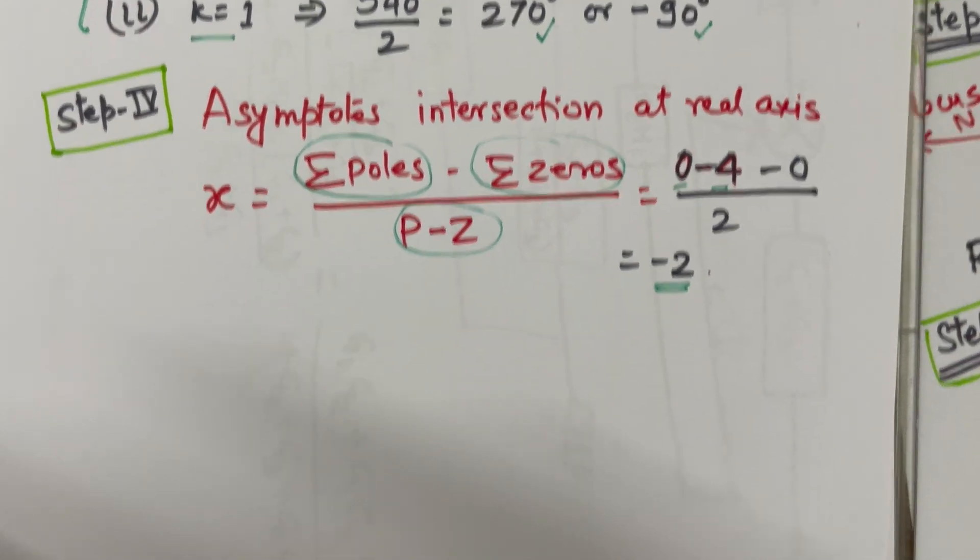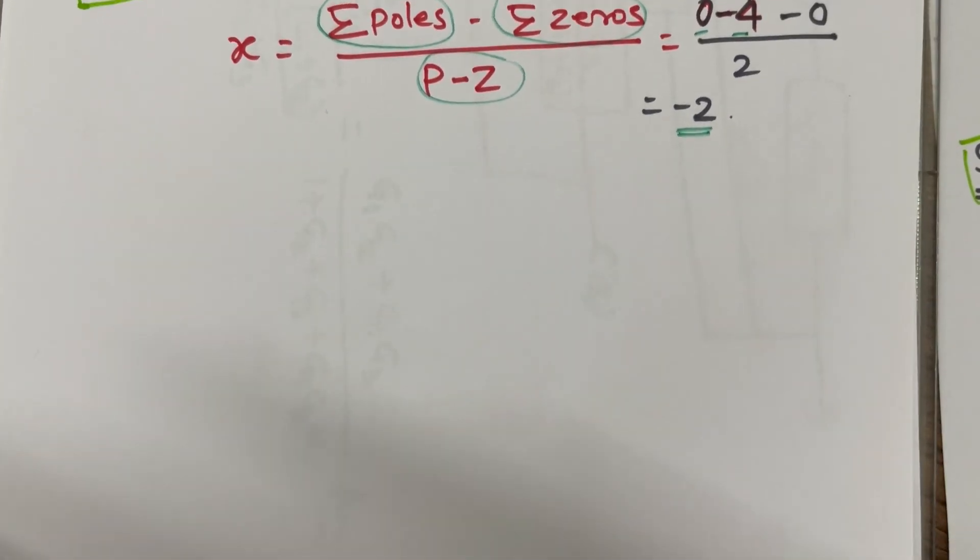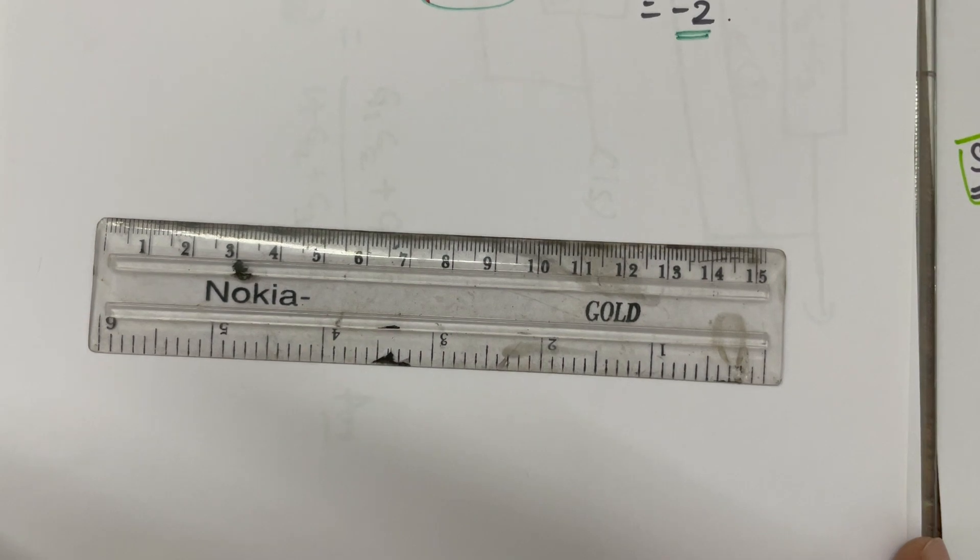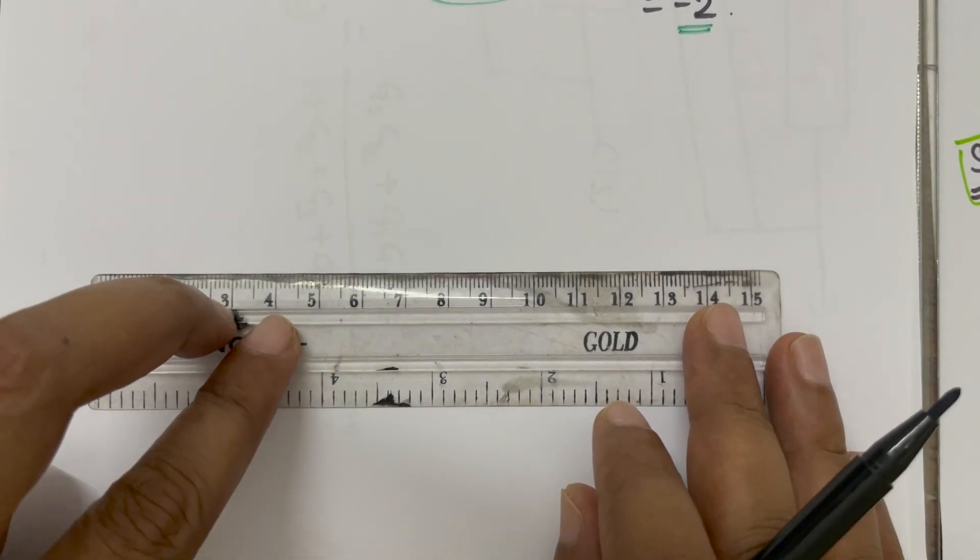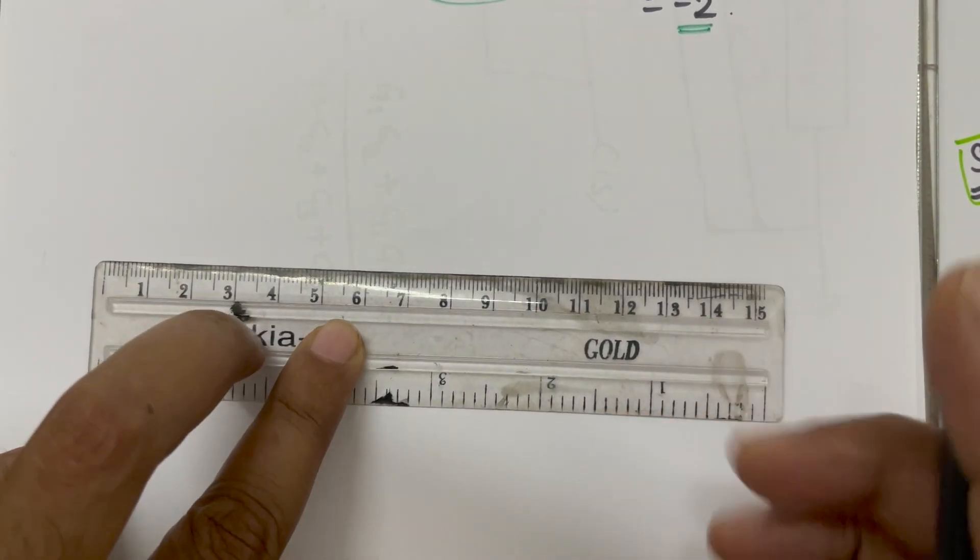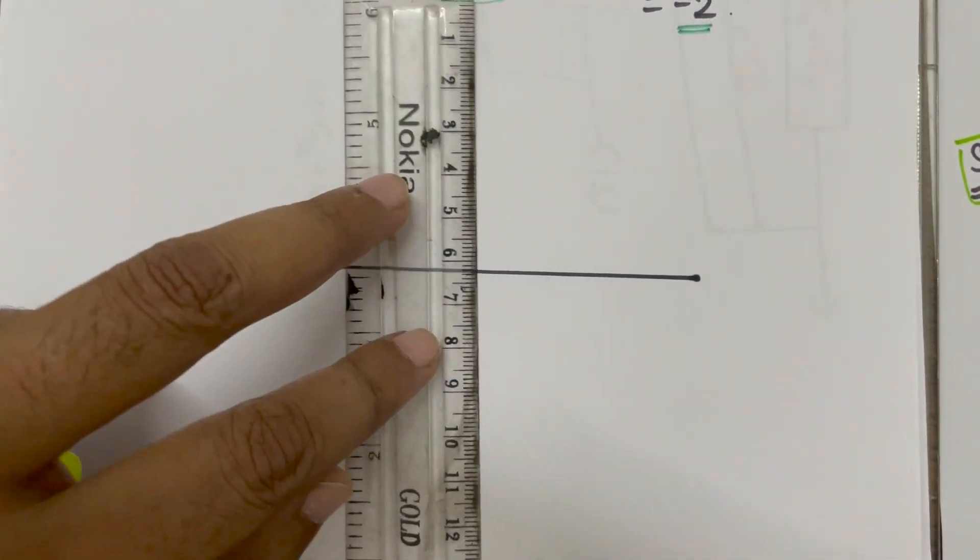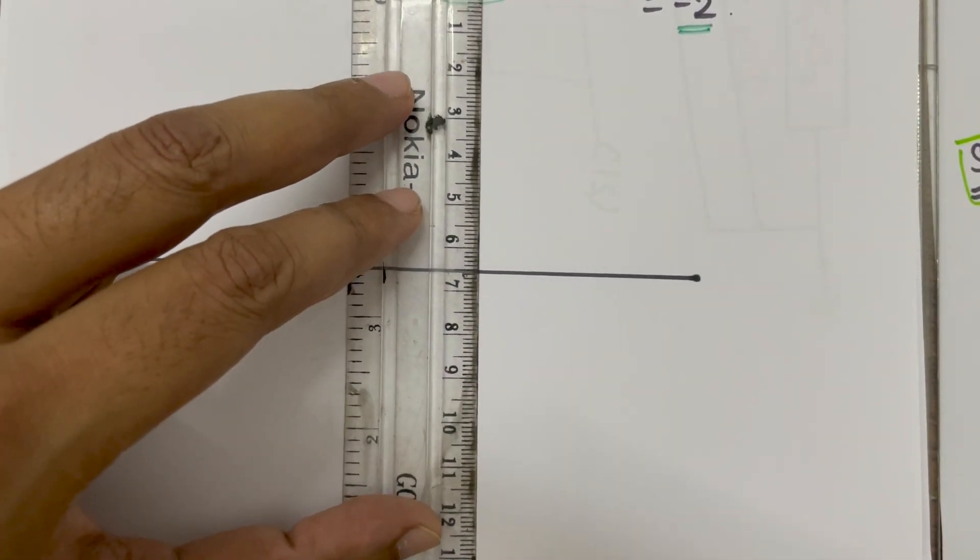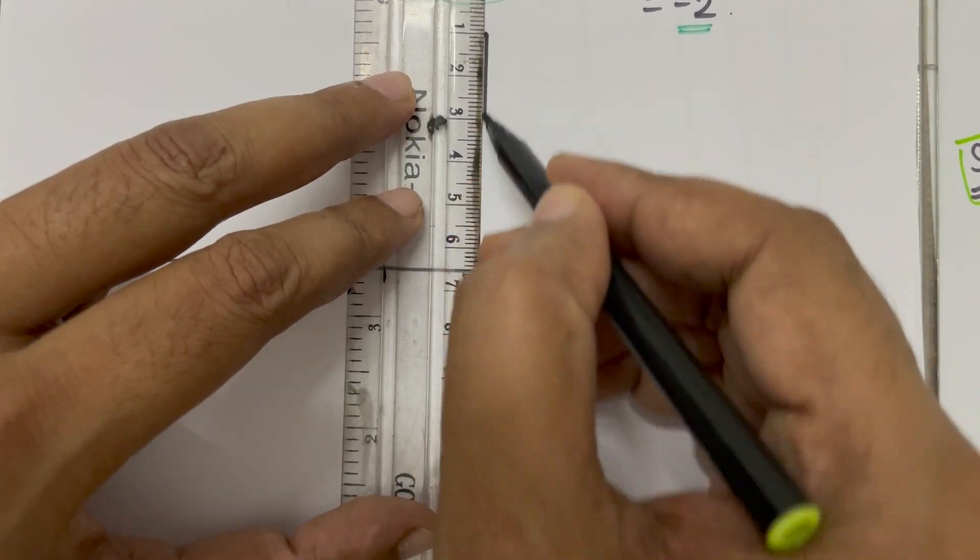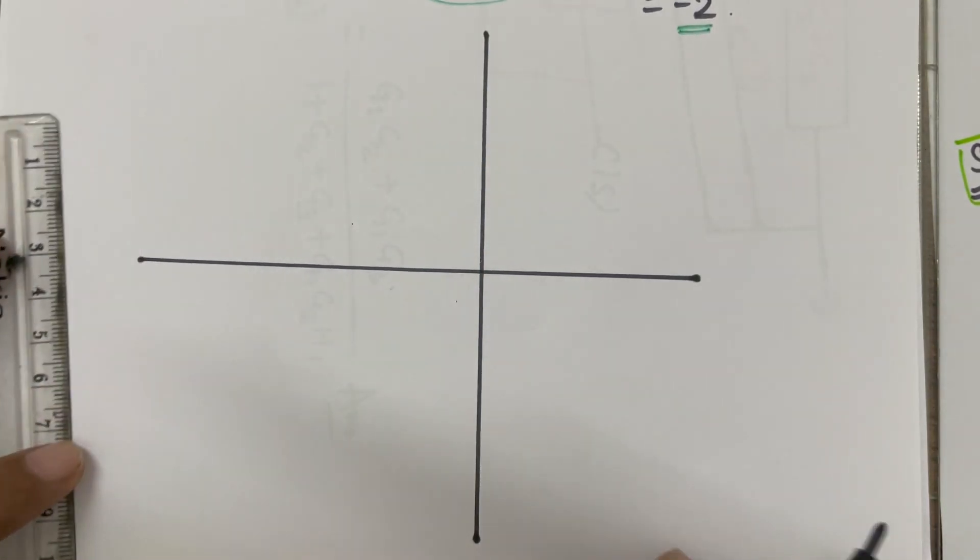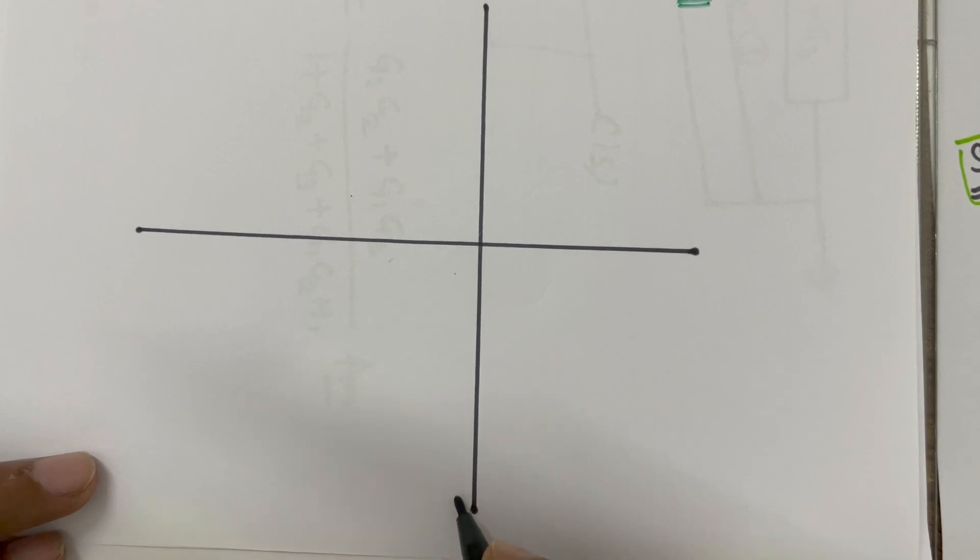Now, we are going to draw with these informations. So, first of all, let us draw the horizontal real axis and then vertical imaginary axis. So, this is our real and imaginary axis.